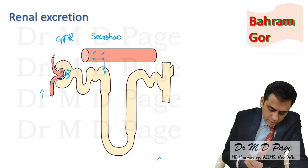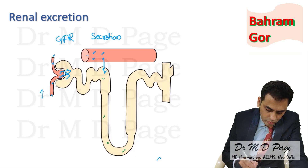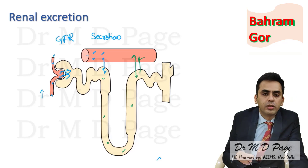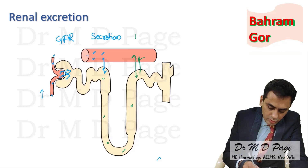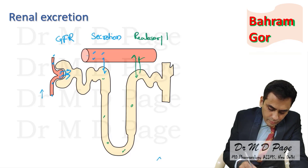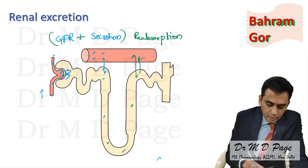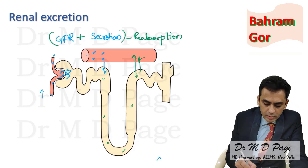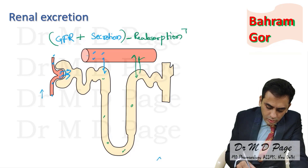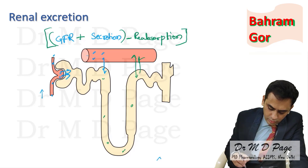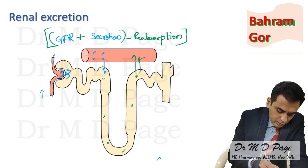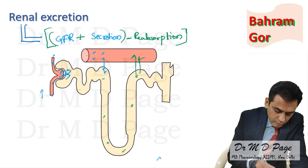If the drug is lipid soluble, it may get reabsorbed in the distal tubules — this is known as reabsorption. So, glomerular filtration plus secretion minus net reabsorption gives us the total renal excretion.